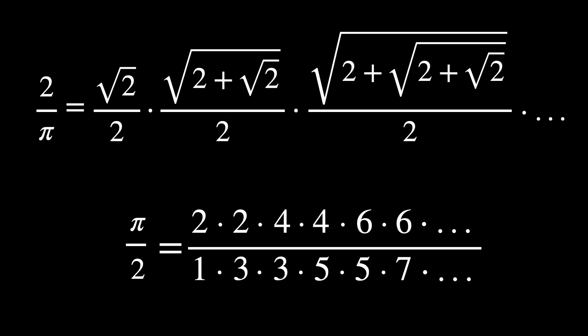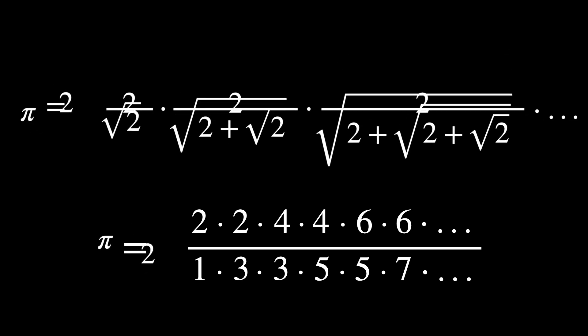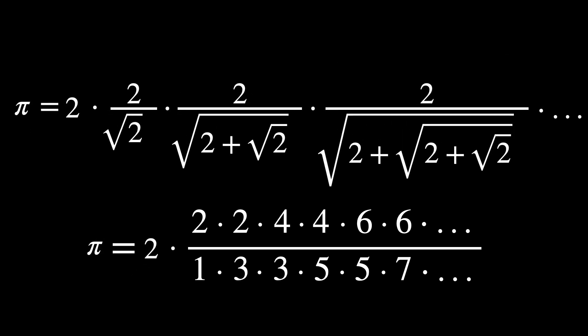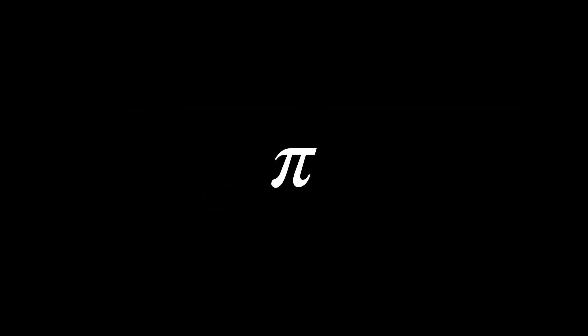The real usefulness of these formulas lies in the fact that we can actually approximate π. As you may have heard, π is an irrational number, which means there is no way to write its value in a finite way — it has infinitely many digits after the decimal point. So you may need an approximation of π, the precision of which depends on your purpose and intent. If you just want to estimate the area of a circle, π approximated to 3.14 might be enough.